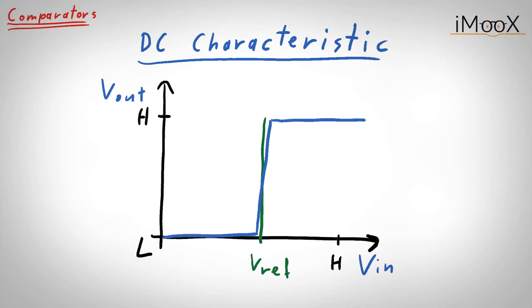However, as nothing is ideal, also the real characteristic of a comparator will look slightly different. In fact, it will look like this. The steepness is roughly defined by the open loop gain of the comparator. The higher the open loop gain, the steeper the curve.